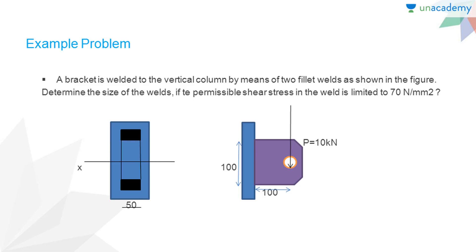Here we have the example problem. A bracket is welded to the vertical column by means of two fillet welds as shown in the figure. Determine the size of the welds if the permissible shear stress in the weld is limited to 70 newton per millimeter square.